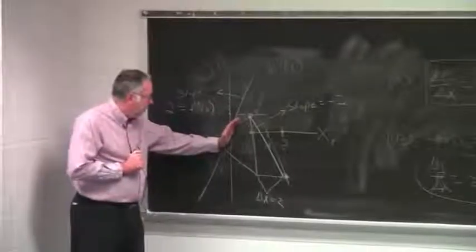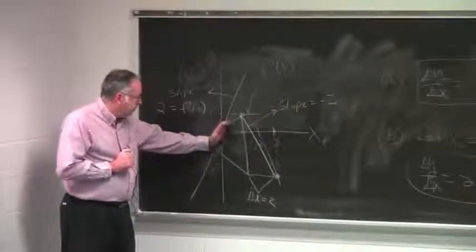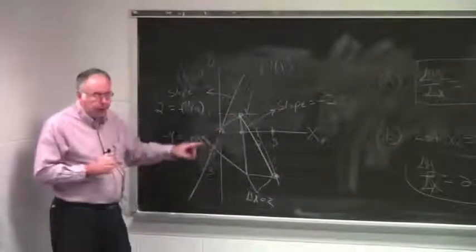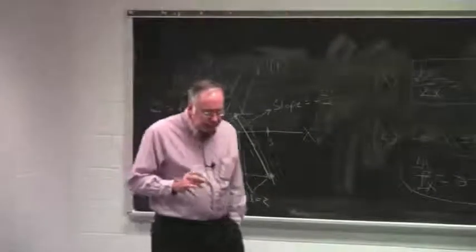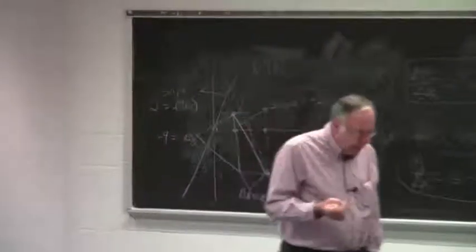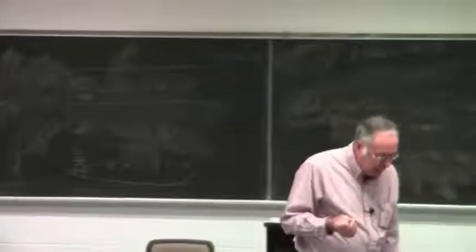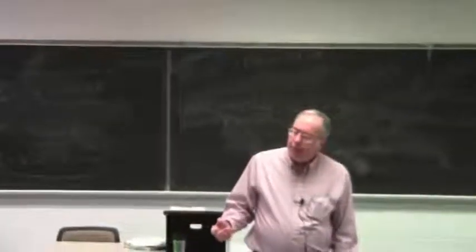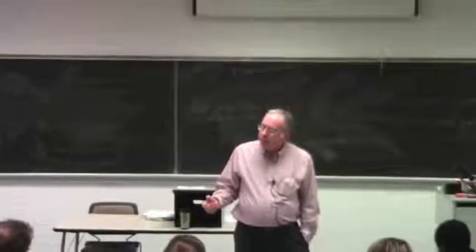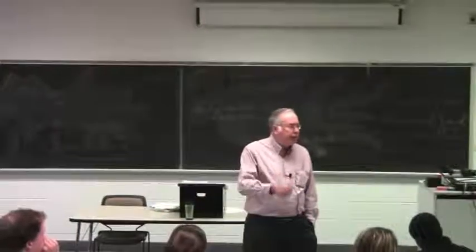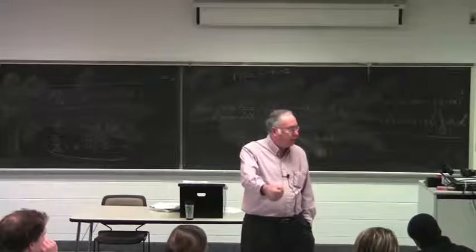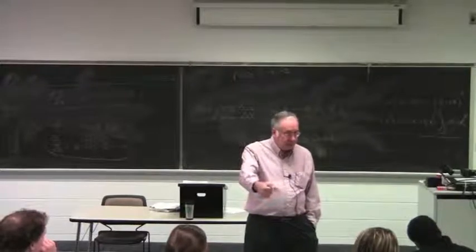The point slope of the function at x equals zero is equal to two. What that means intuitively is at x equals zero, at that point on the function, the rate of change of y with respect to x is two. The instantaneous rate of change of y with respect to x at that point is equal to two.